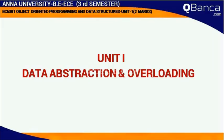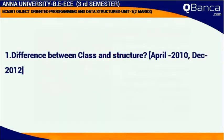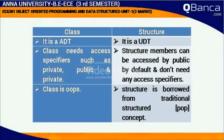Object Oriented Programming and Data Structures, Subject Code EC6301, Unit 1: Data Abstraction and Overloading. Part A: Difference between Class and Structure. Answer: Class is an ADT; Structure is a UDT. Class needs access specifiers such as private, public, and protected. Structure members can be accessed as public by default and need no access specifiers.